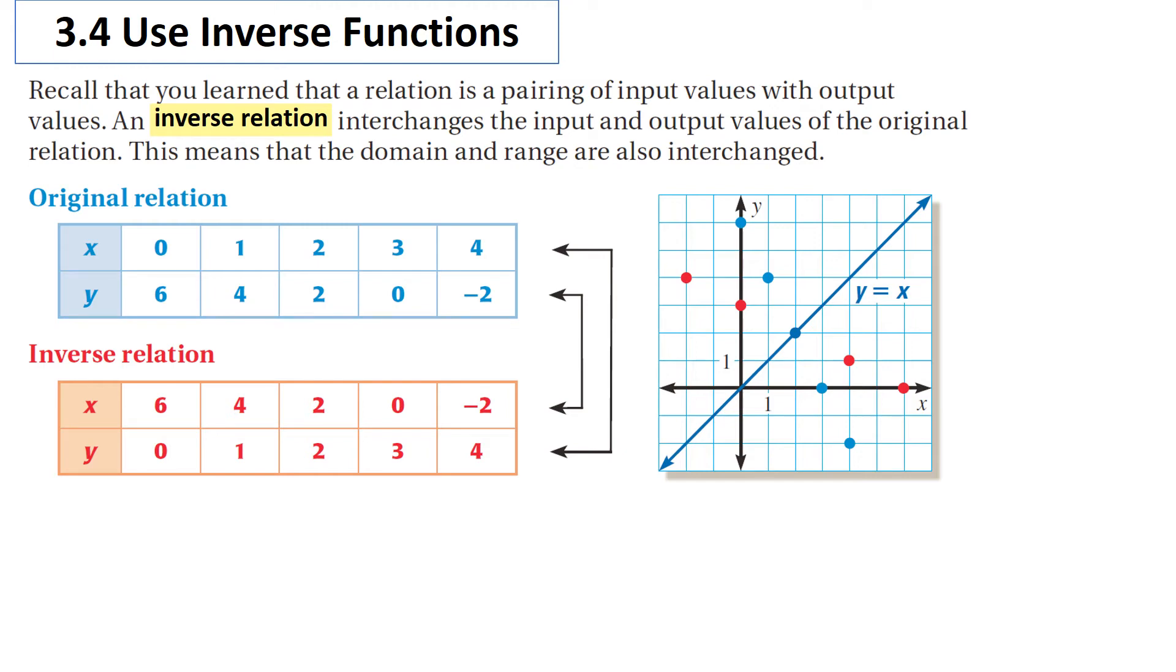A relation is a pairing of input values with output values. An inverse relation interchanges the input and output values of the original relation. This means that the domain and range are also interchangeable.